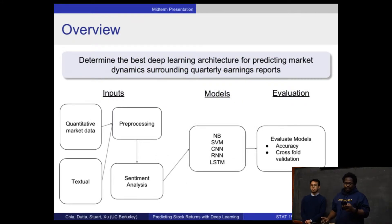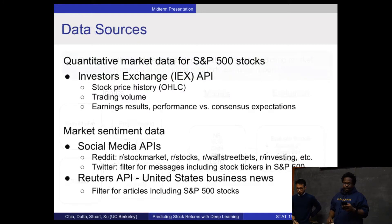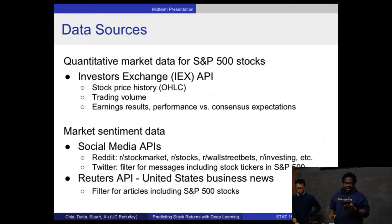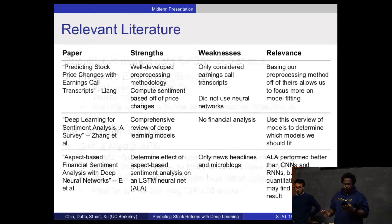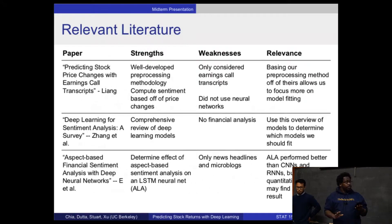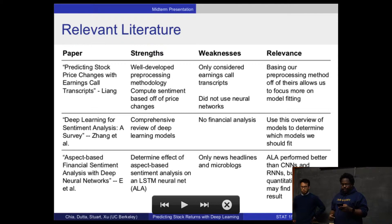We're asking the question of whether deep learning approaches to sentiment analysis are going to enable us to predict market dynamics surrounding earnings reports. And if we are able to do that, we want to know which architectures are going to be the best at doing so.